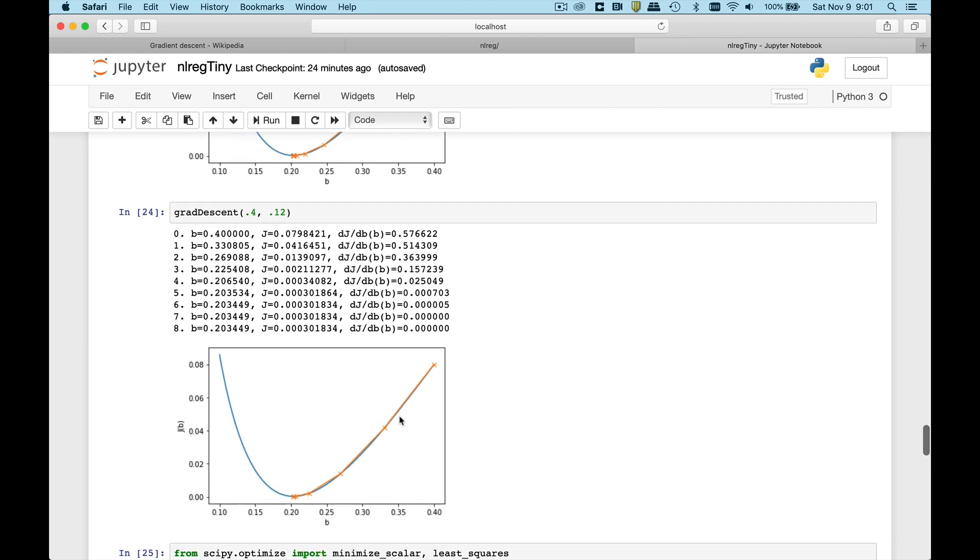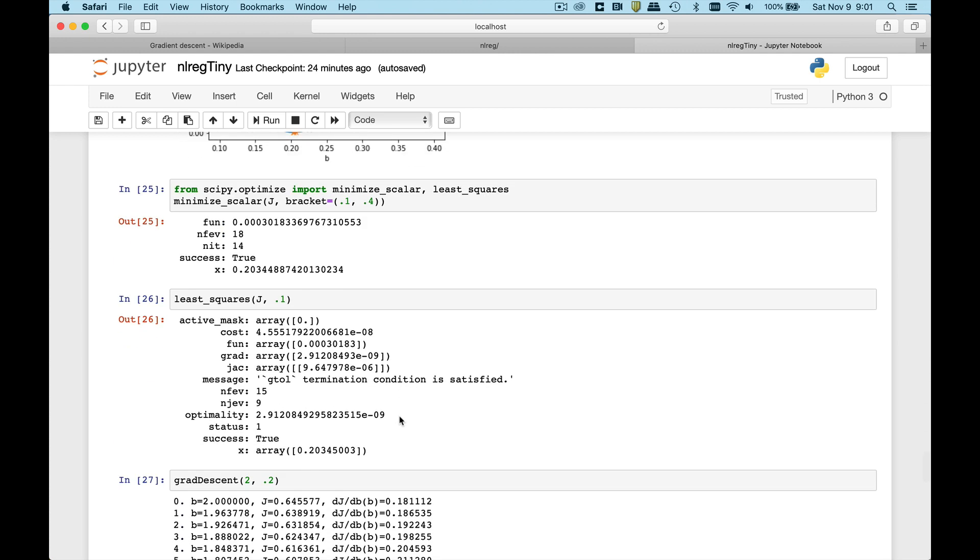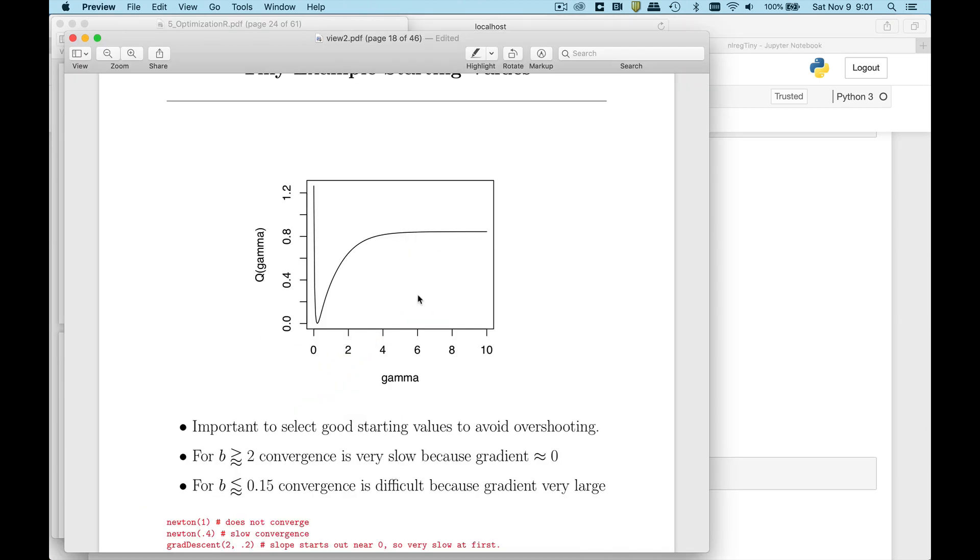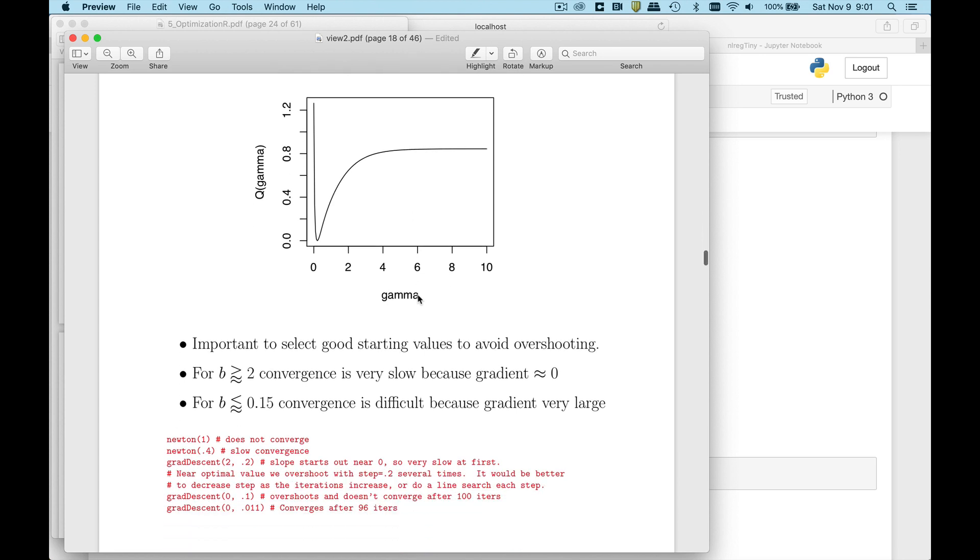I just tried different step sizes here. So that's it for gradient descent. You know the trick again is good starting values and keeping an eye on that step size. Those are the keys to this.